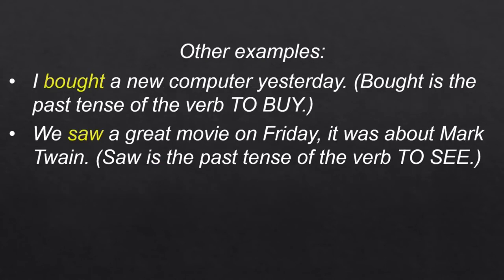Some other examples of irregular verbs: 'I bought a new computer yesterday.' 'Bought' is the past tense of the verb 'to buy.' 'We saw a great movie on Friday — it was about Mark Twain.' 'Saw' is the past tense of the verb 'to see.'